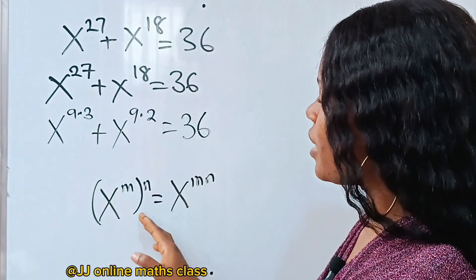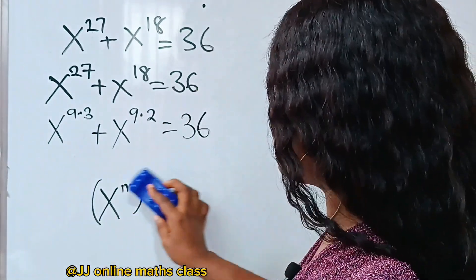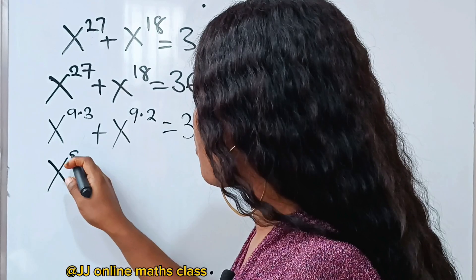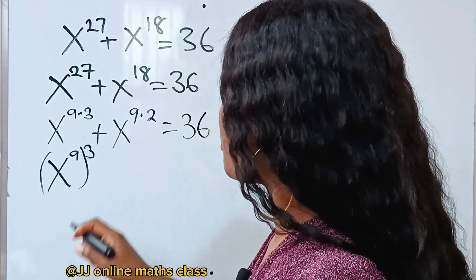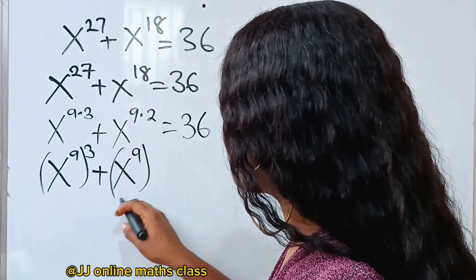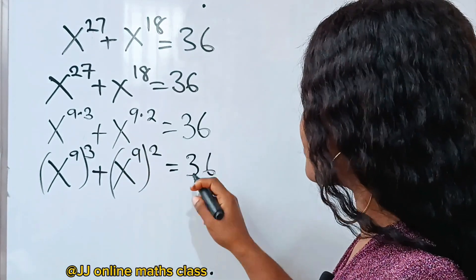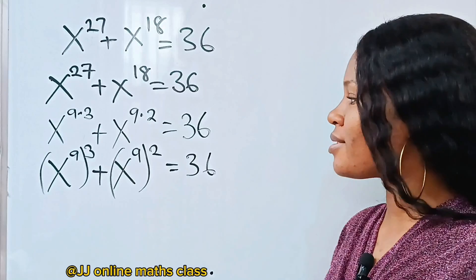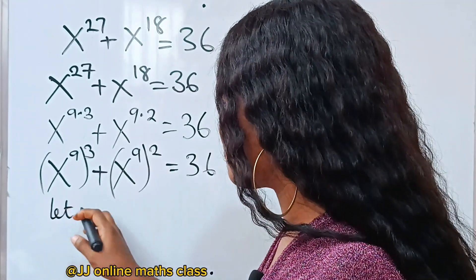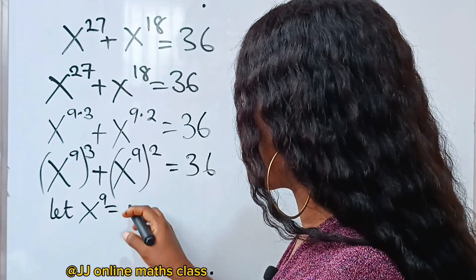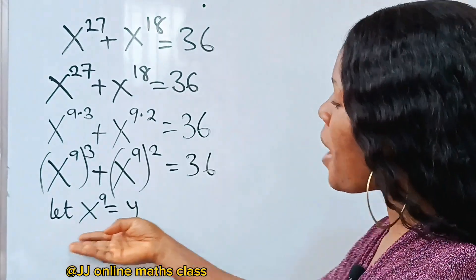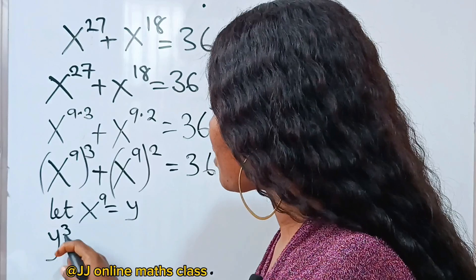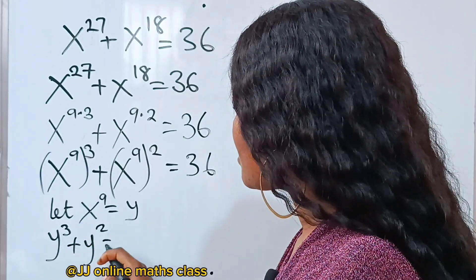We can bring one of those exponents inside our bracket. Bringing out the common factor of 9, we can write x to the power of 9 raised to the power of 3, plus x to the power of 9 to the power of 2, is equal to 36. Now we can form a cubic polynomial. Let x to the power of 9 be equal to y. Once we do this, we can plug it into this equation and we will have y to the power of 3 plus y squared is equal to 36.